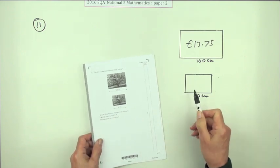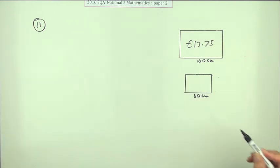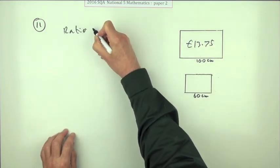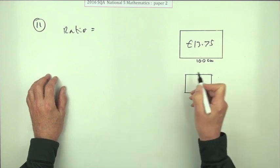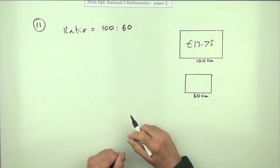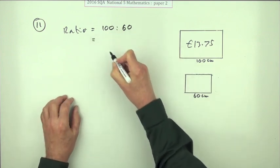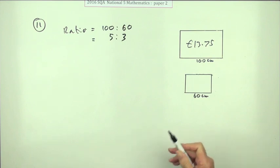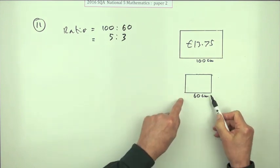What's the ratio between the shapes? Let's get that down first. The ratio we've got is 100 to 60, and of course it's a calculator paper so you don't need to cancel that down, but that's going to be 5 to 3.